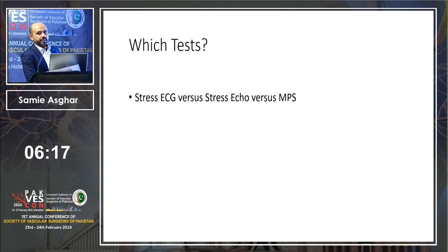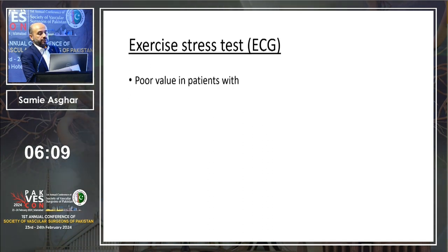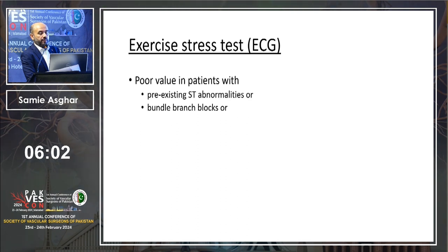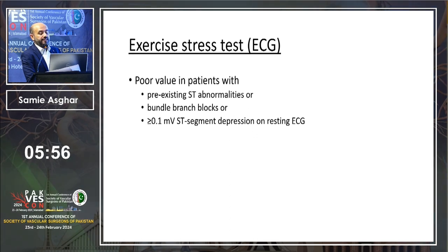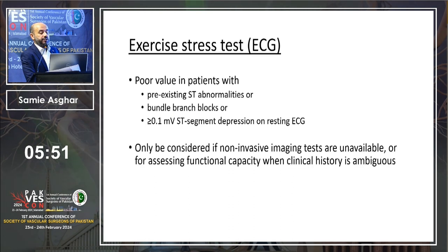Which stress test should we use? We have stress ECG, stress echo, and MPS. Stress ECG is of poor value in patients with a pre-existing ST segment change, bundle branch block like our patient, or more than 0.1 mV ST segment depression on resting ECG. Stress ECG should only be considered if non-invasive imaging tests are unavailable, or for assessing functional capacity when clinical history is ambiguous.